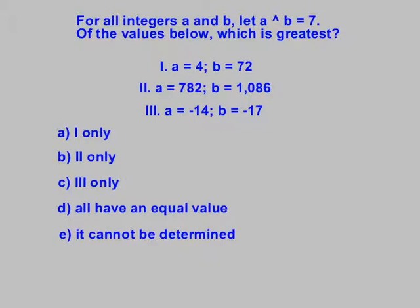The key here is to focus on the rule you're given. It says a arrow up b equals 7. Well, if I put a 4 in for a and a 72 in for b, what do I get? 7. If I put a 782 in for a and a 1086 in for b, what do I get? 7. Nothing changes that 7 on the right-hand side of the equation.